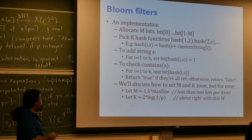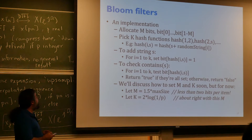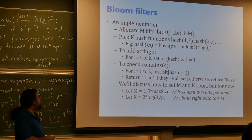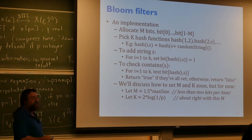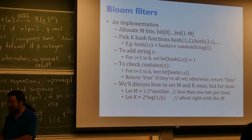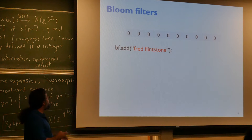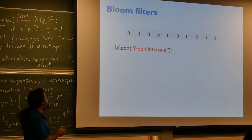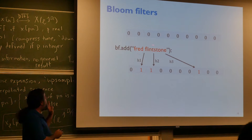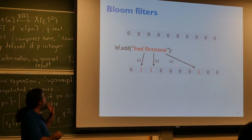The number of bits, number of hash functions, and size of the hash table are all related. It works to let k be about log(1/p), and m be about n times 1.5 bits. So I start off with all bits set to zero. I'm adding Fred Flintstone — hash it three times. The first hash function gives 1, the next gives 2, the next gives 7 — I set those bits. Then I add Barney Rubble and set three bits in different places. Fred's bits are red, Barney's bits are blue, and one overlapping bit is purple — it was set for two different strings.